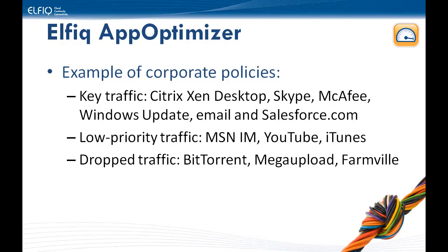Low priority traffic can still be allowed but throttled down so it doesn't consume all available bandwidth. Microsoft Instant Messenger, iTunes, and YouTube are good examples. Netflix can be allowed or simply dropped. We can drop BitTorrent, Mega Upload, FarmVille, and many others. That's a quick summary example of what a policy set can look like.